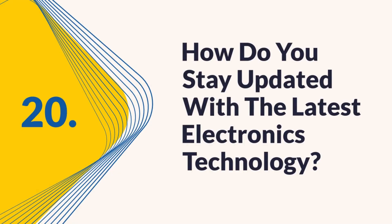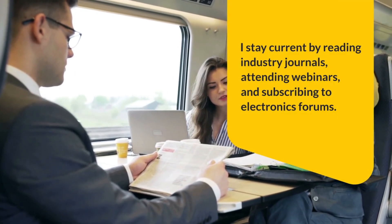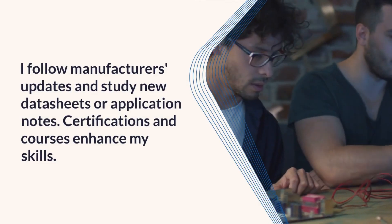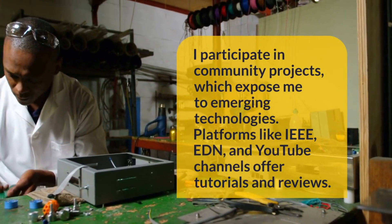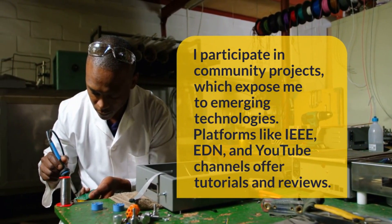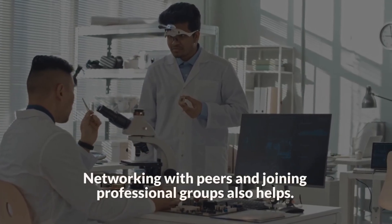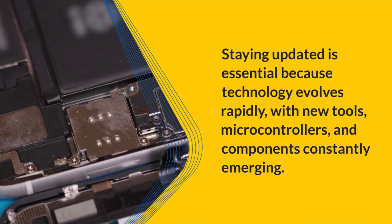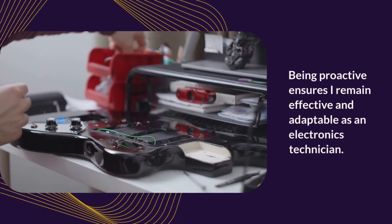Question 20: How do you stay updated with the latest electronics technology? I stay current by reading industry journals, attending webinars, and subscribing to electronics forums. I follow manufacturers' updates and study new data sheets or application notes. Certifications and courses enhance my skills. I participate in community projects, which expose me to emerging technologies. Platforms like IEEE, EDN, and YouTube channels offer tutorials and reviews. Networking with peers and joining professional groups also helps. Staying updated is essential because technology evolves rapidly, with new tools, microcontrollers, and components constantly emerging. Being proactive ensures I remain effective and adaptable as an electronics technician.